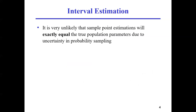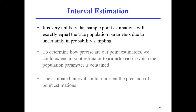Of course you can do this, but when you do this, you simply assume that population mean equals sample mean and population standard deviation equals sample standard deviation. Of course, it's possible that these two parameters from population and sample are very close to each other — not likely exactly the same — but still, it's a big assumption you are making. So beyond that, we have interval estimation because it is very unlikely that sample point estimations will exactly equal the population parameters due to uncertainty in probability sampling.